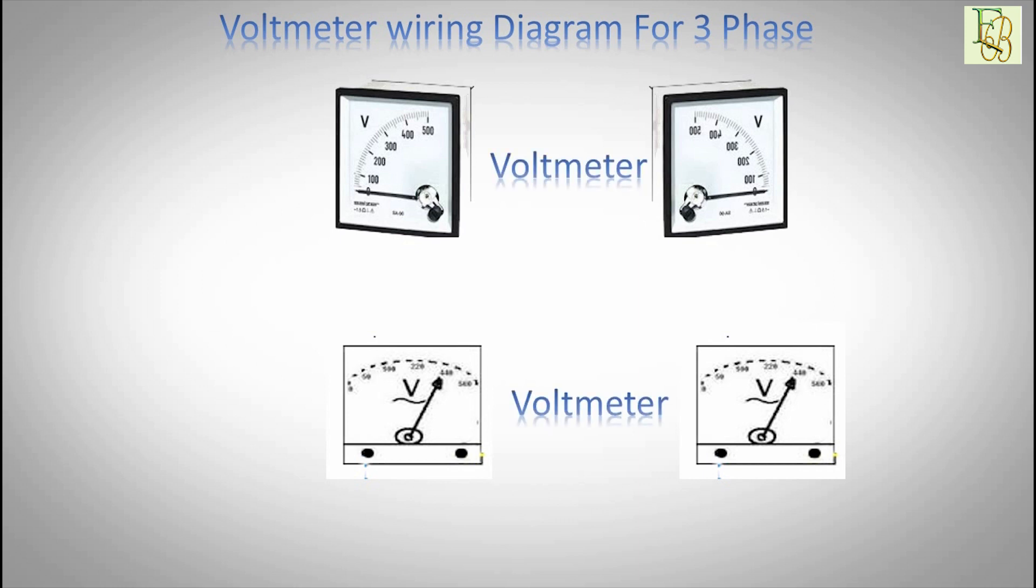Voltmeter. First phase red. Second phase yellow. Third phase blue.